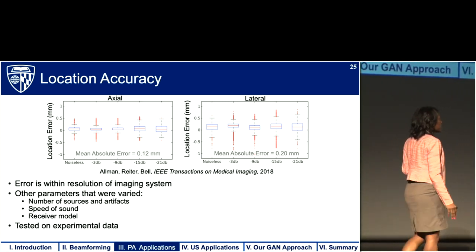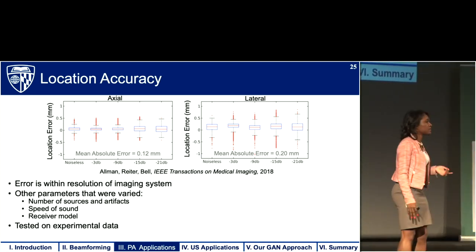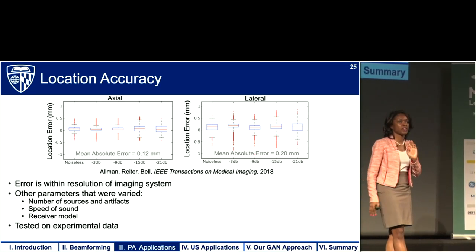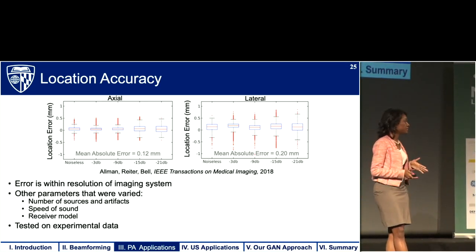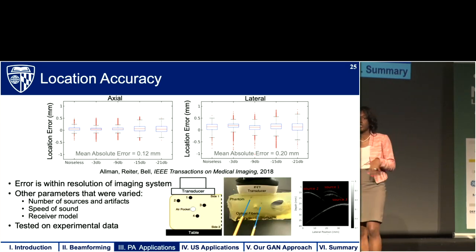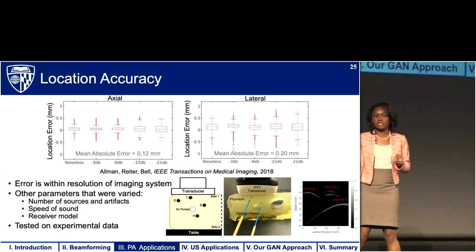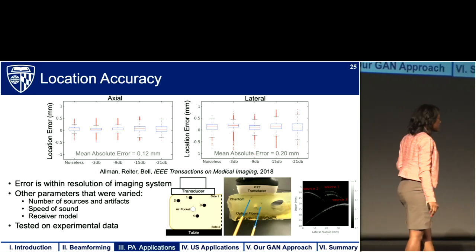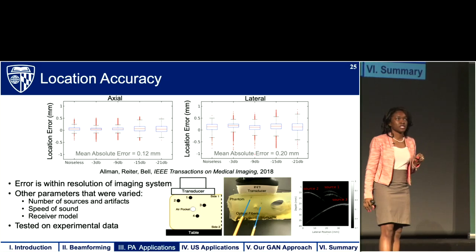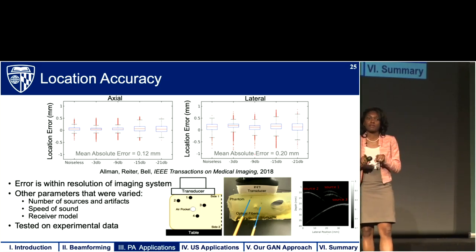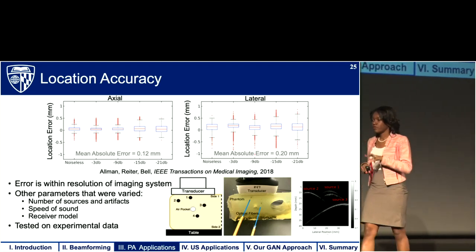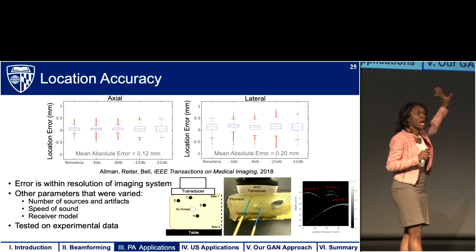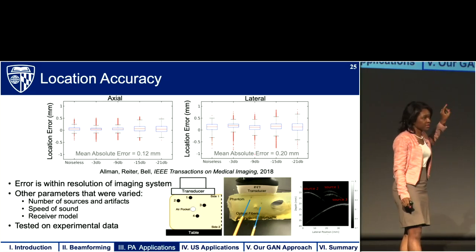Once we have a well-trained network with all parameters varied, we can transfer it to experimental data. We use a phantom containing brachytherapy seeds that look like point sources in this ultrasound probe view, and we can selectively illuminate which sources show up in the image by pointing optical fibers at them. This photograph shows us selectively illuminating two sources, and this image shows what happens when we selectively illuminate three sources.